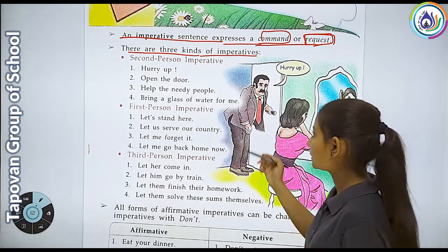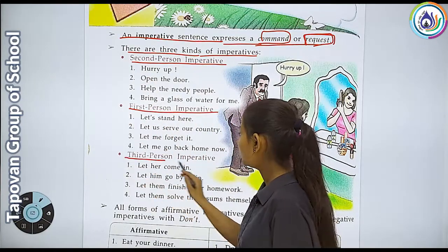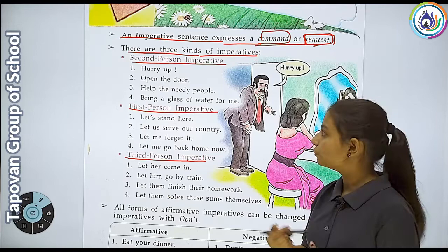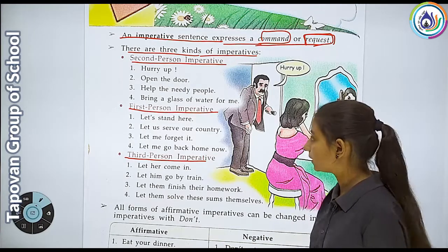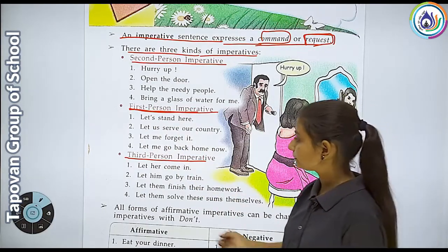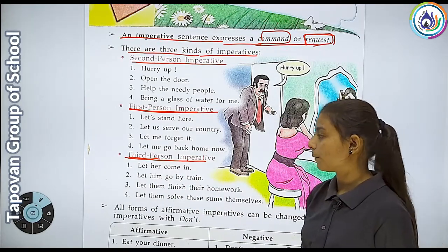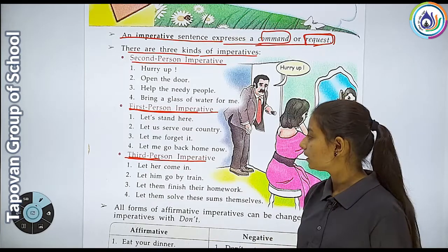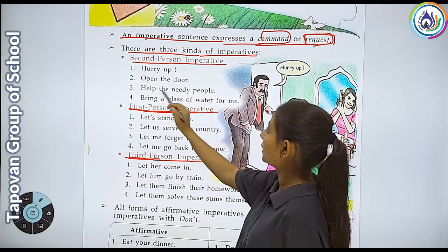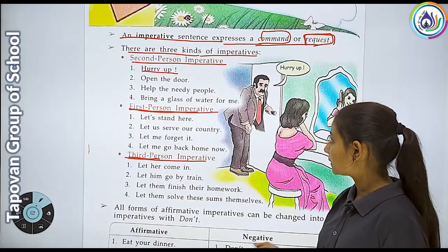There are three kinds of imperative: first is second person imperative, first person imperative, and third person imperative. Second person imperative mein aayega jab hum kisi doosre insaan se baat karte hain. First person imperative mein aayega jab hum khud ke liye kehte hain. Third person mein aayega jab koi insaan jo wahan haazir nahi hota, uske liye hum baat karte hain. Jaise ki second person imperative mein aayega - 'hurry up', jaldi karo.